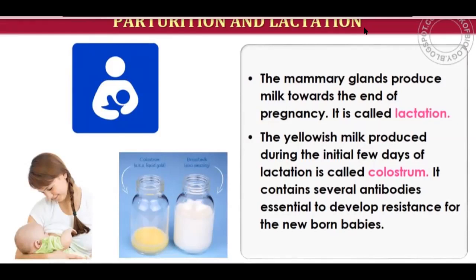This concludes the topic of human reproduction. We covered the male and female reproductive systems, then gametogenesis, then fertilization, and finally embryonal development up to parturition. There are many important conceptual questions from this chapter.